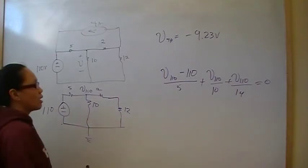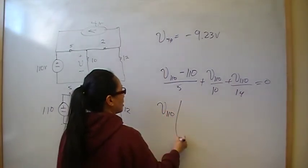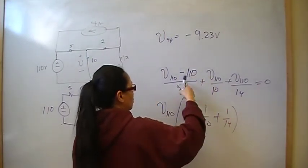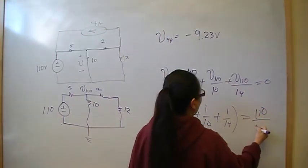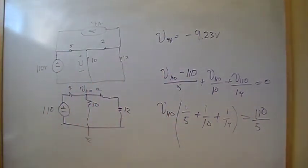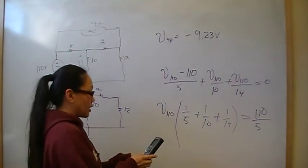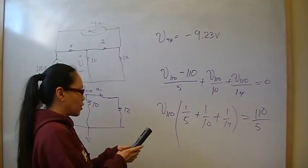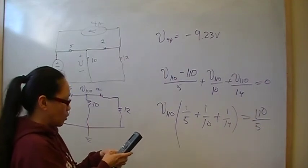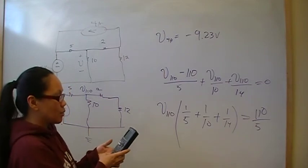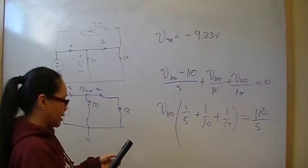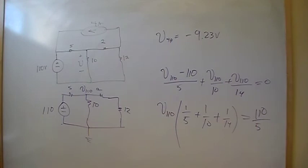So then V110, just from algebra, coefficients will be 1/5 plus 1/10 plus 1/14. And then this 110 will go on the other side as 110 over 5. So then V110 is going to be this divided by that. So then you're going to go 110 divided by 5. That will give you 22. Then 1/5 plus 1/10 plus 1/14 should give you 0.37142857. Now we're going to go 22 divided by 0.37142857. And that gives us 59.230769.